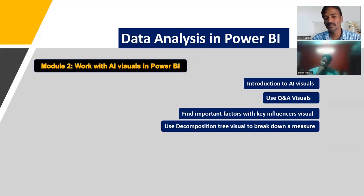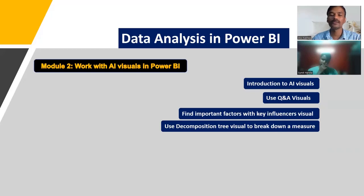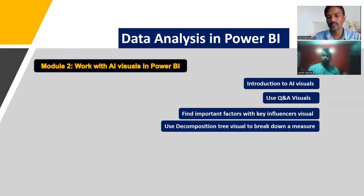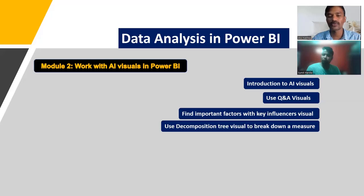The second module in the Data Analysis section covers working with AI visuals in Power BI. There is a Question and Answer visual where we can ask questions in natural language and Power BI provides visuals based on those questions. Power BI can also suggest visuals automatically, rather than requiring us to build them manually — that is the built-in AI capability of Power BI.